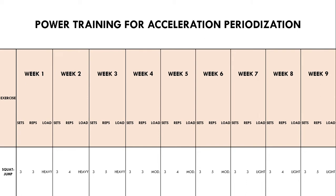For example, a nine-week periodized program may look something like this. We have chosen the squat jump, where we start with heavier loads and therefore slower movement velocities, and we transition slowly to lighter loads and therefore faster movement speeds.